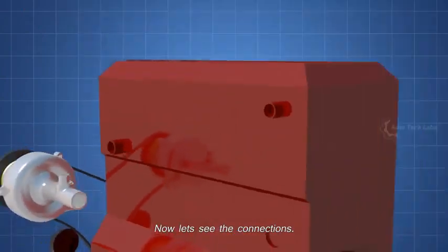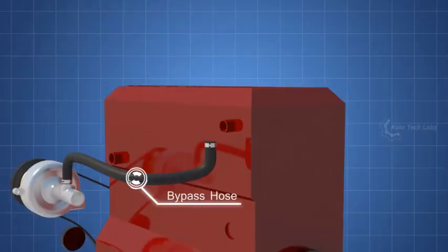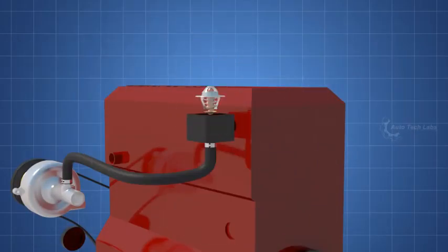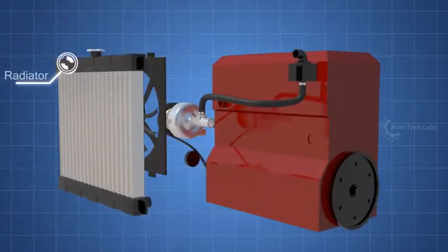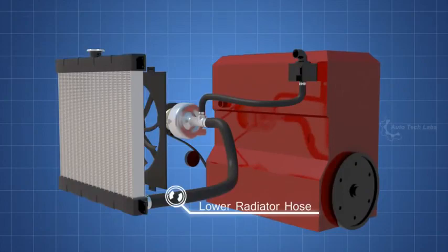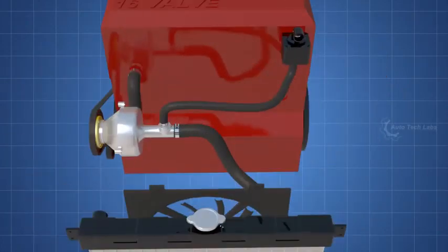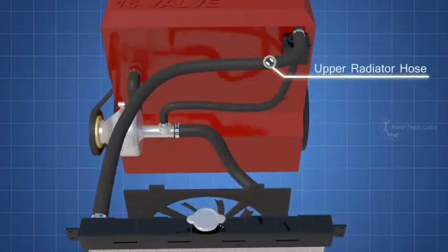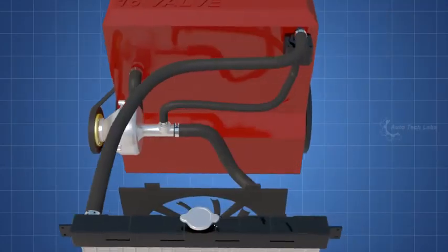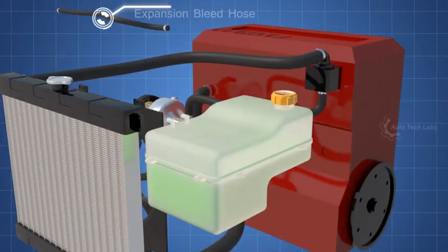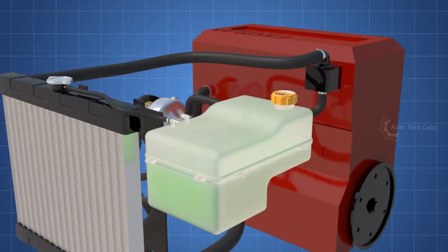Now let's see the connections. The thermostat, the thermostat bypass hose. The thermostat housing. Inside, the thermostat. The radiator and the radiator fan. The lower radiator hose. The water pump outlet hose. The upper radiator hose. The coolant expansion tank. The expansion bleed hose. Coolant overflow hose.